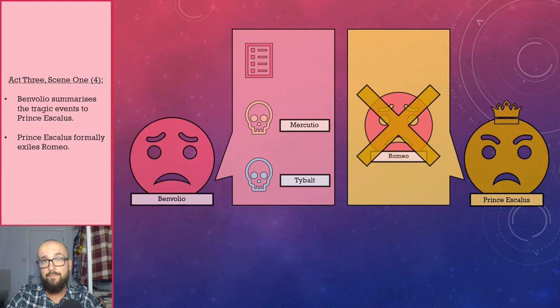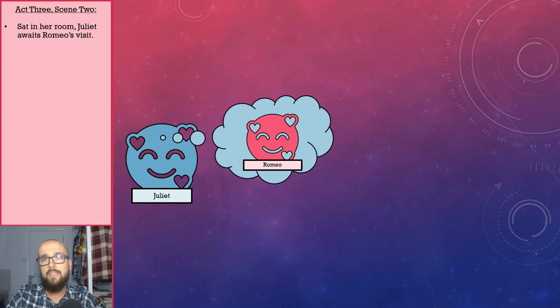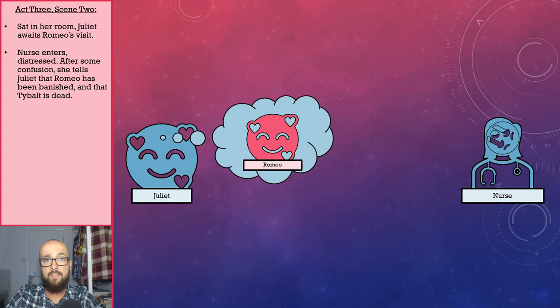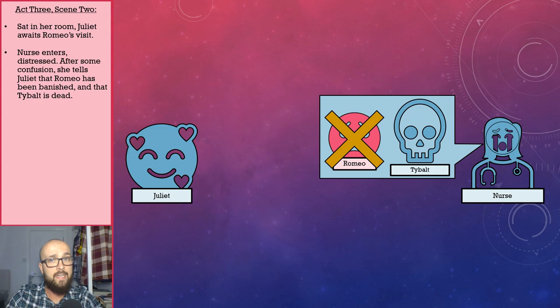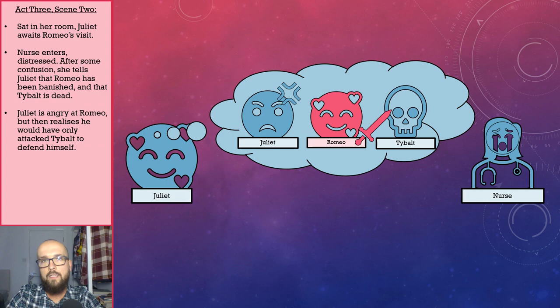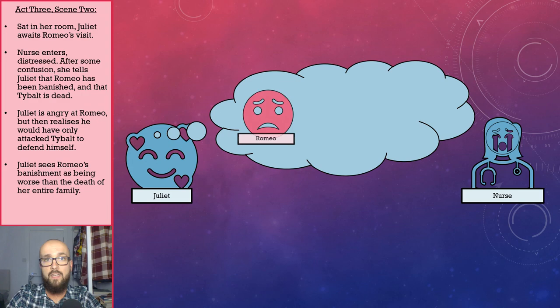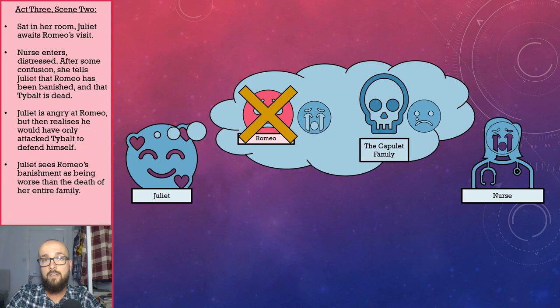Away from all that drama, Act 3 Scene 2 takes place in Juliet's room, where she is impatiently awaiting Romeo's visit. Nurse turns up, distressed, and after a spot of confusion, tells Juliet that Romeo has been banished and that Tybalt is dead, killed by Romeo. Initially Juliet is angry at Romeo for killing Tybalt, but she quickly realises Romeo would have only attacked Tybalt to defend himself. Juliet then states that she sees Romeo's banishment as being worse than the death of her entire family. As the scene closes, Nurse says she will bring Romeo to Juliet.